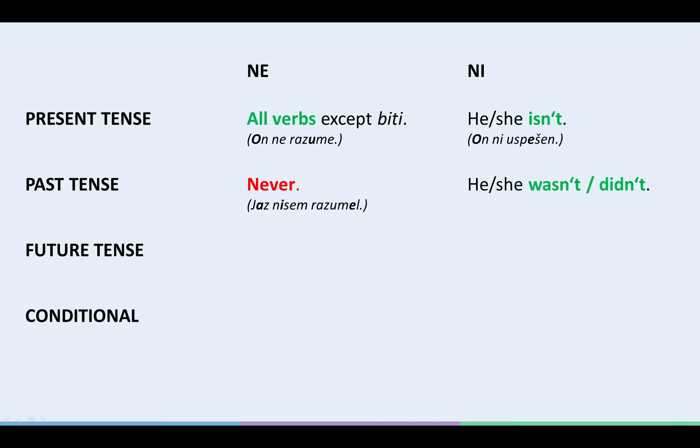We use NI in the past tense ONLY when saying HE, SHE WASN'T, or HE, SHE DIDN'T. For example, ON NI BIL USPEŠEN. HE WASN'T SUCCESSFUL. Or ON NI ŠEL NAZAJ. HE DIDN'T GO BACK.